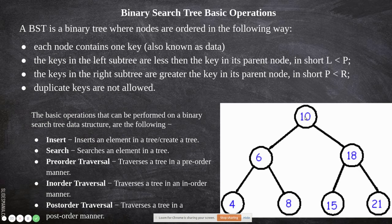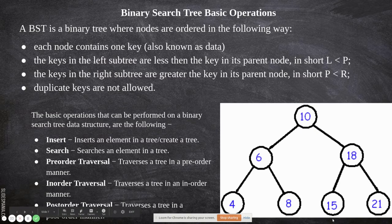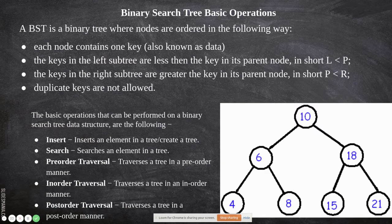Looking at the example here, the left child has a value lesser than the parent, and 8 is greater than the parent. Similarly, 18 is the parent node of these two — its left child is lesser than it and its right child is greater than the parent. This strict logic, in addition to the binary tree property, is what makes this a binary search tree.